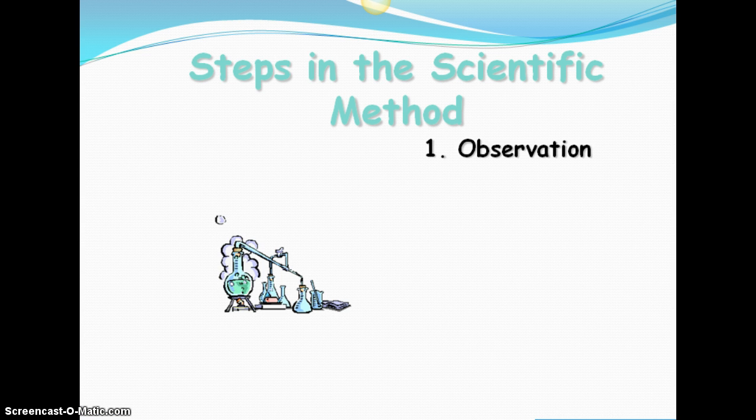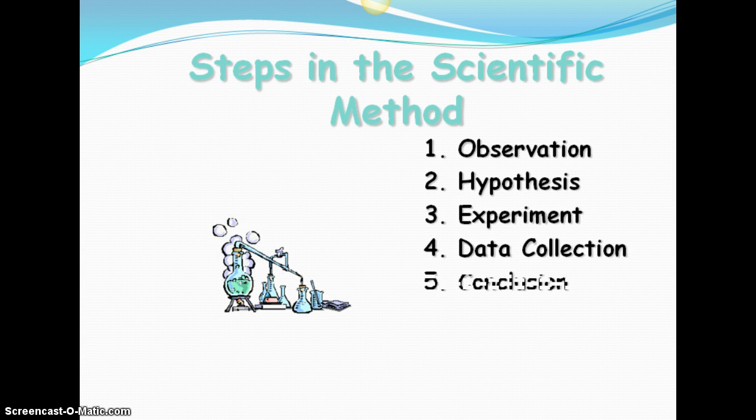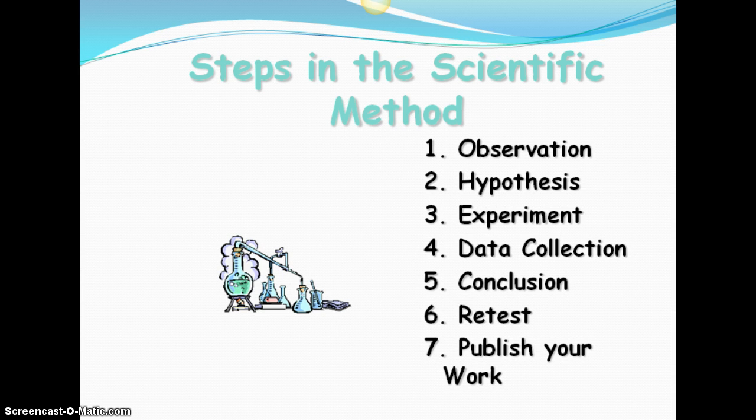So our basic steps in the scientific method, we start with an observation. Sometimes you'll see scientific method steps start with a problem and then an observation, and that's fine. Sometimes people put observation and problem together. Then we go to a hypothesis, we experiment, we collect data, we conclude based on our hypothesis, and then we often retest immediately, and then we will publish the work.